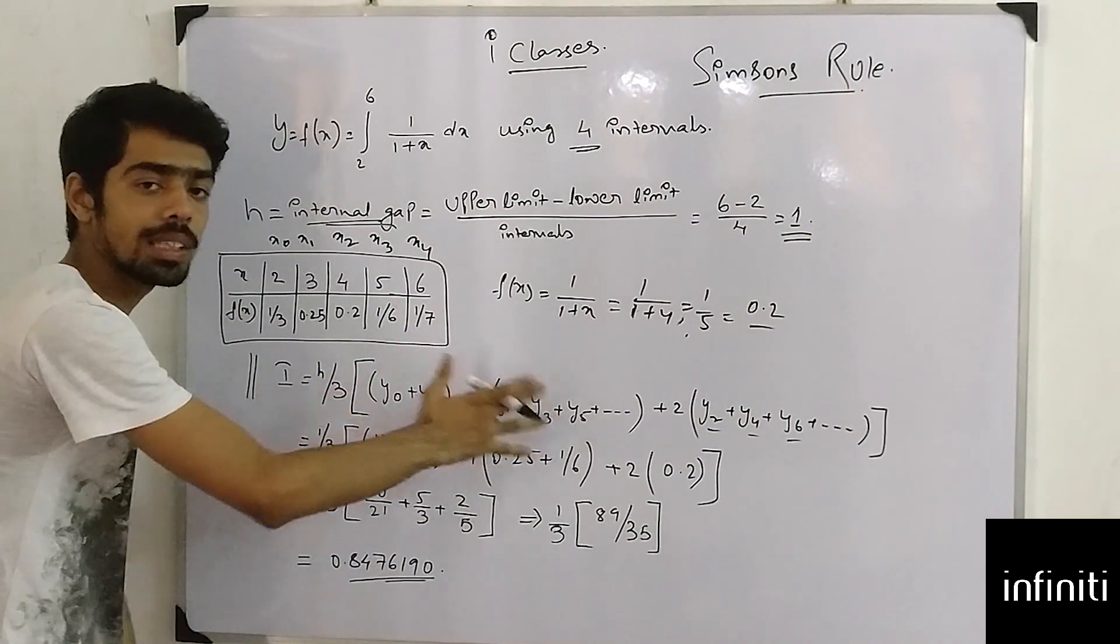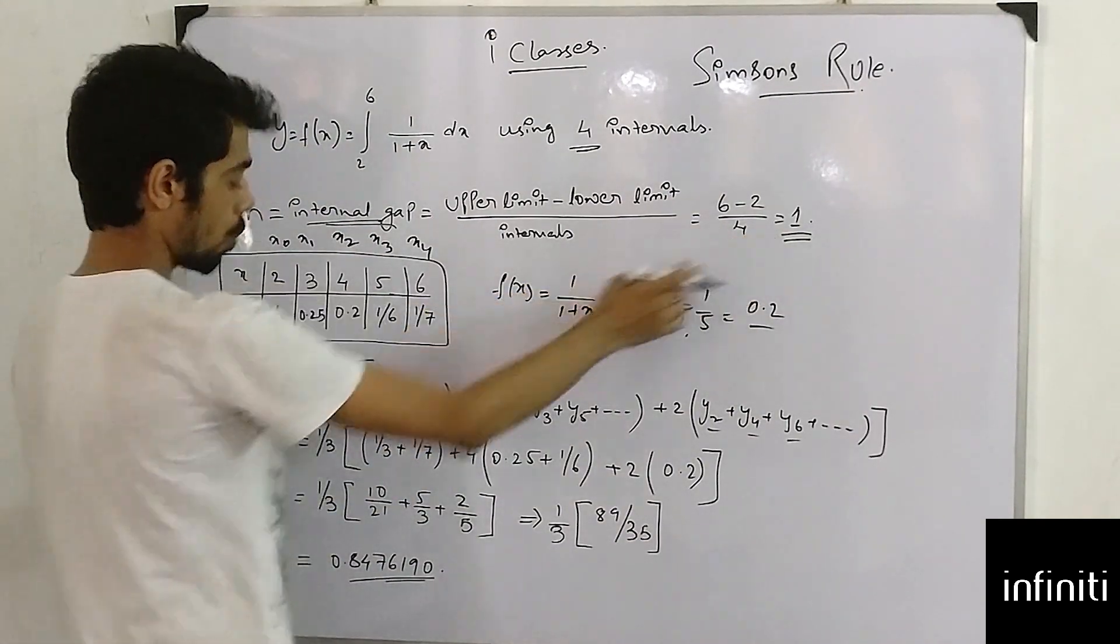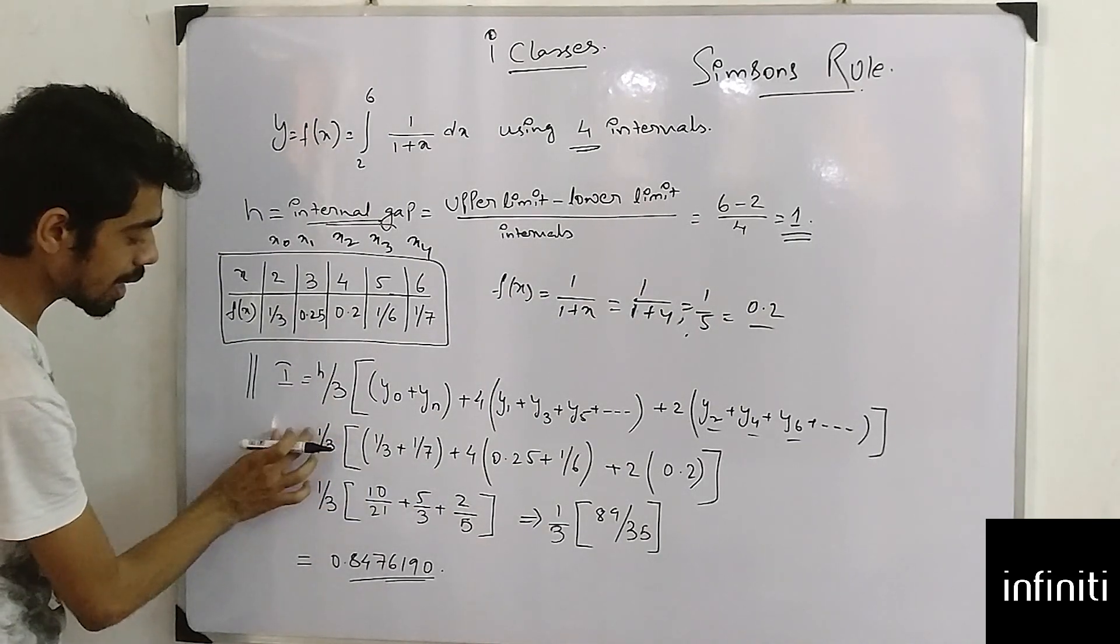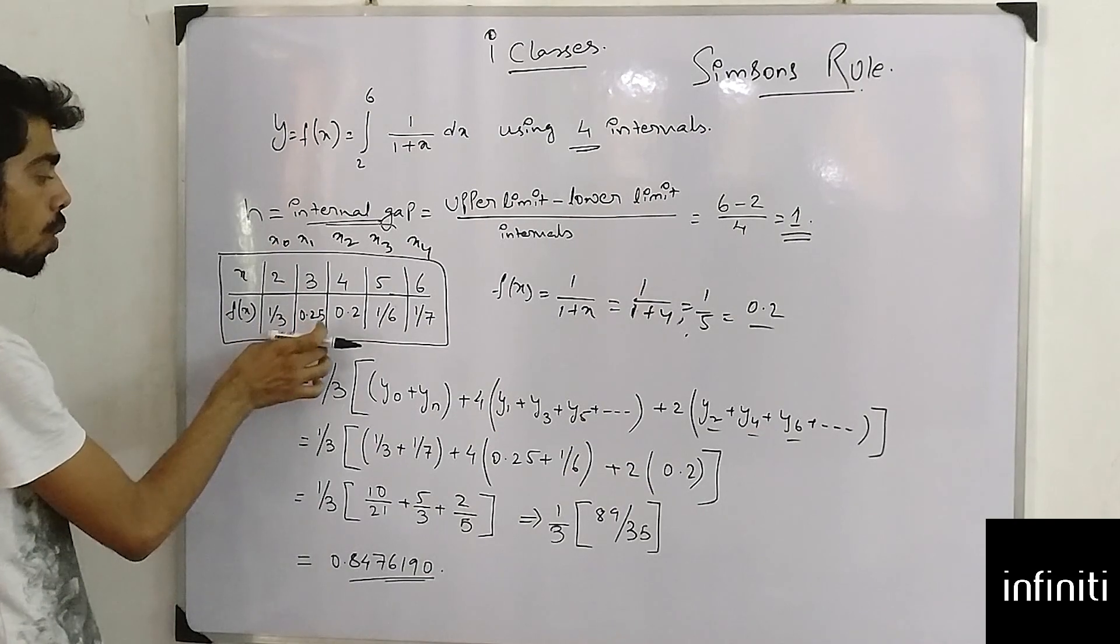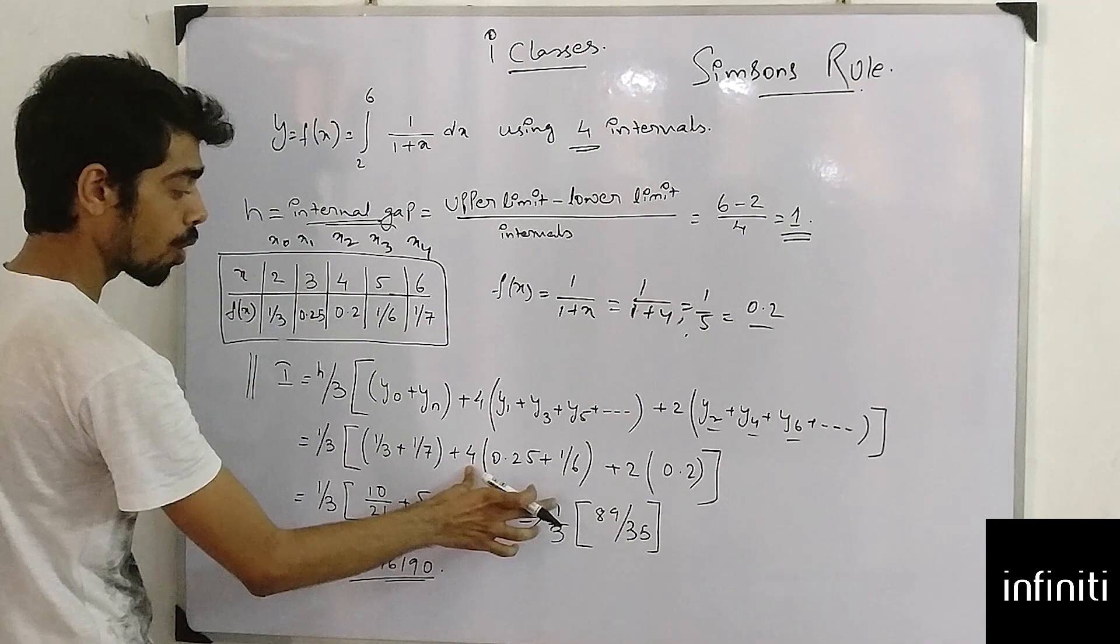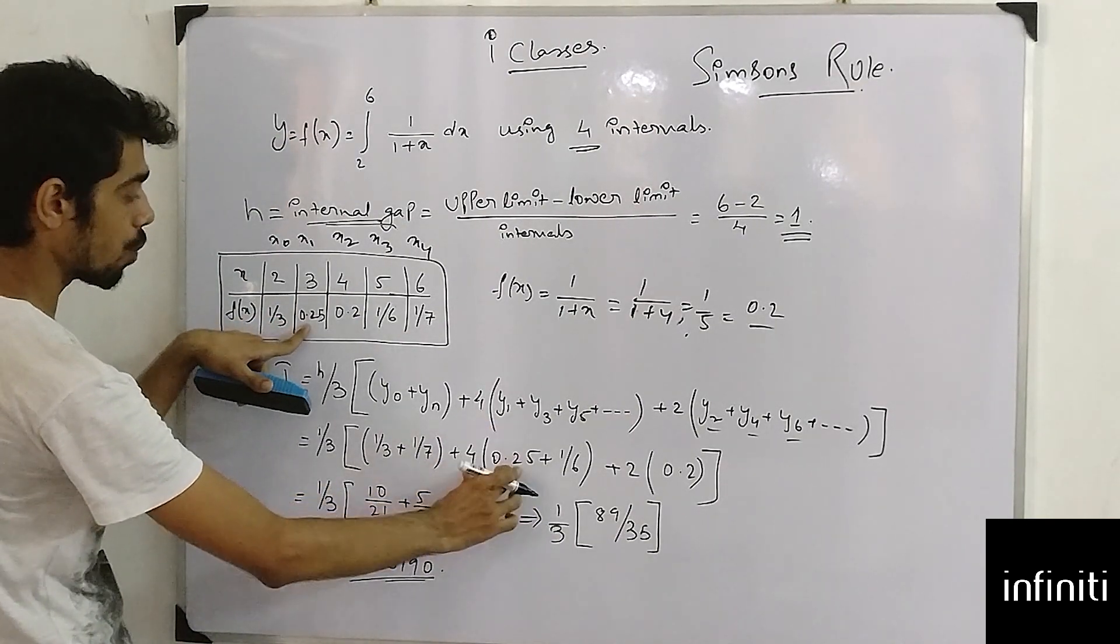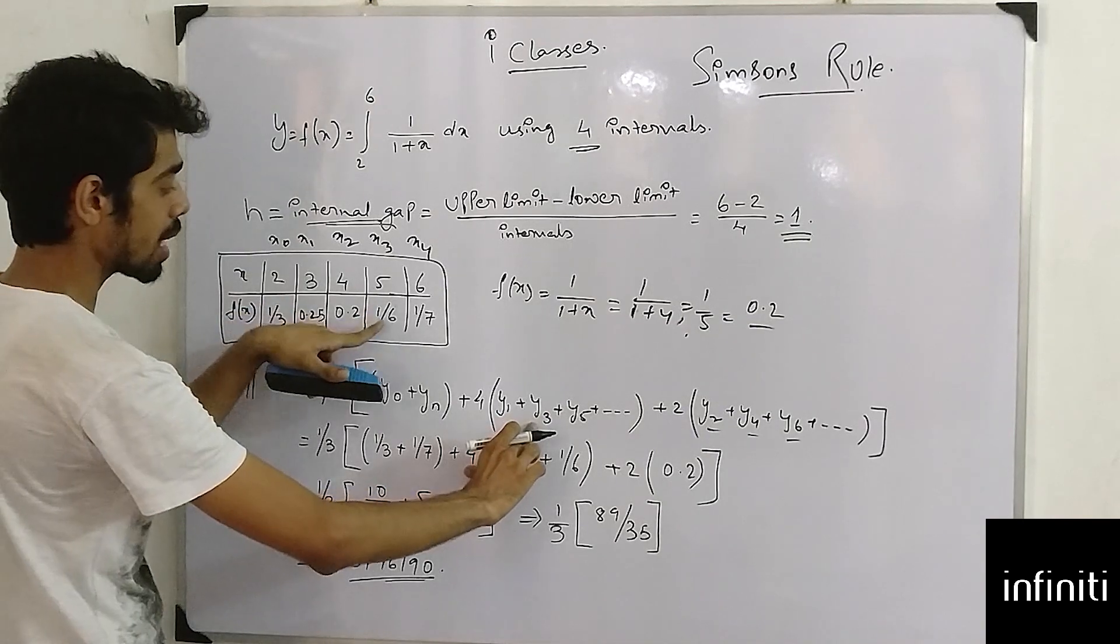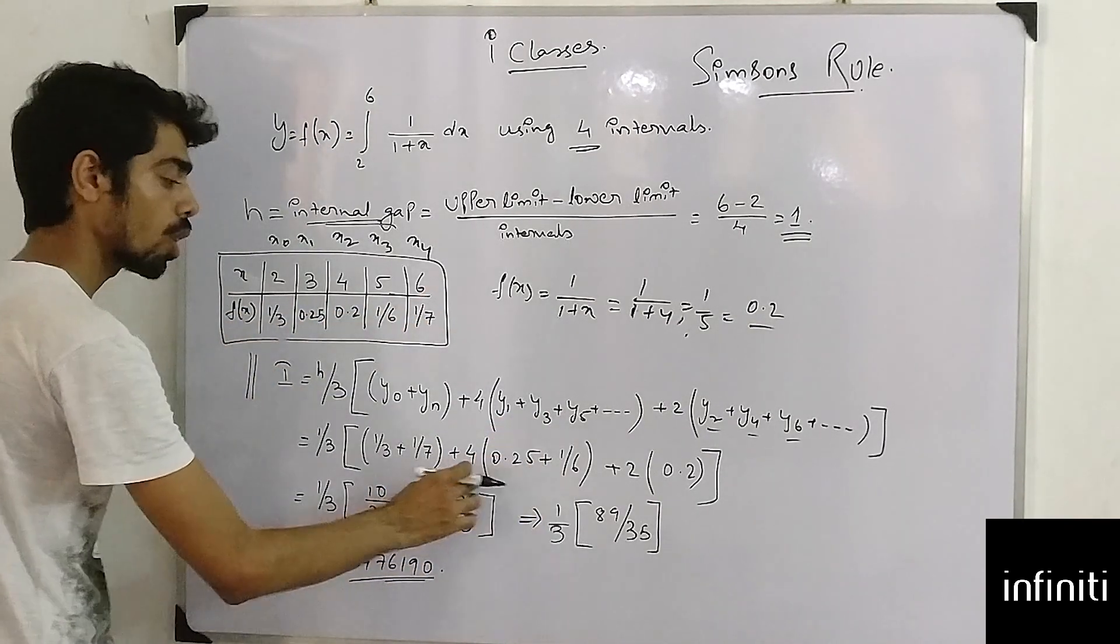Now I am just putting my values over here, which is h equals 1, 1 by 3. Y0 plus yn: what is y0? Y0 is 1 by 3. What is yn? 1 by 7. I have put it over there. What is 4 into y1? Where is my y1? 0.25. Again y3, what is my y3? 1 by 6. Is there y5? No, so it is completed.